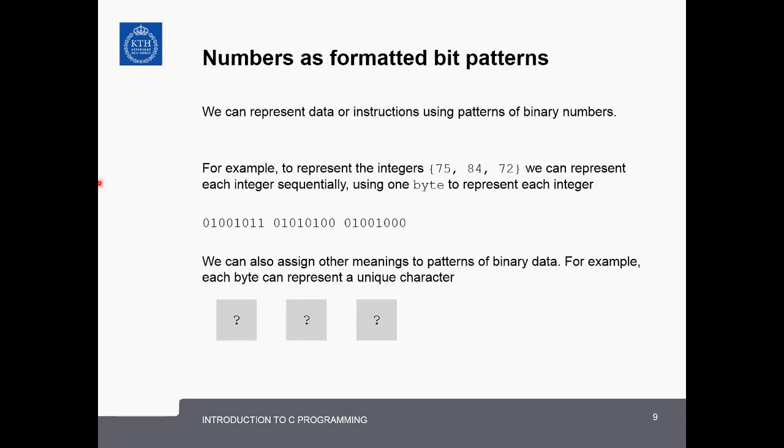Now we've seen how binary can be used to store and represent a single number, but how can we represent more complicated data? The answer is to use formatted patterns of binary numbers. For example, if we want to represent a set 75, 84, 72, we can do this by representing each integer sequentially using a format where we have one byte to represent each integer. This byte represents the first integer 75, this one the second integer 84, and this one the third, 72.